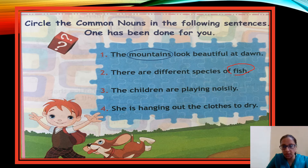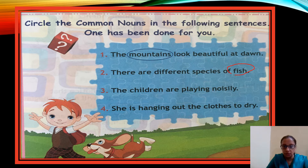Next sentence: 'The children are playing noisily.' Which children are being talked about? No particular children are specified, so 'children' is a common noun. We will circle 'children'.